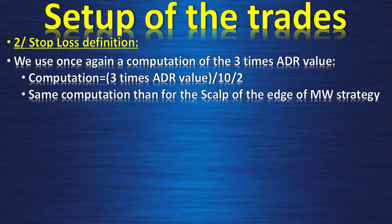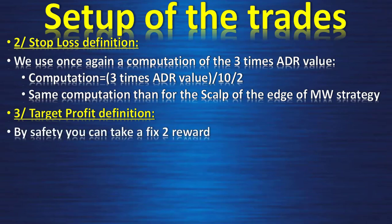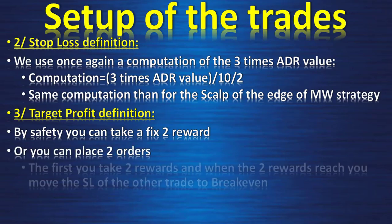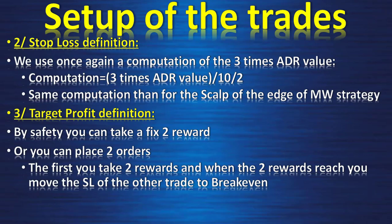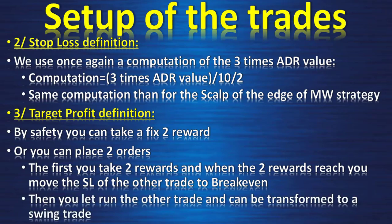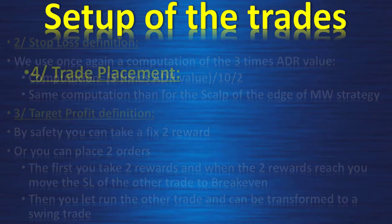This is the same computation as for the scalp of the edge of the M&W strategy. For target profit definition, by safety you can take a fixed 2-reward all the time. Or you can place 2 orders: the first takes 2 rewards, and when the 2 rewards are reached you move the stop-loss of the other order to break even. Then you let the other trade run, which can be transformed into a swing trade — sometimes kept for 1 week.